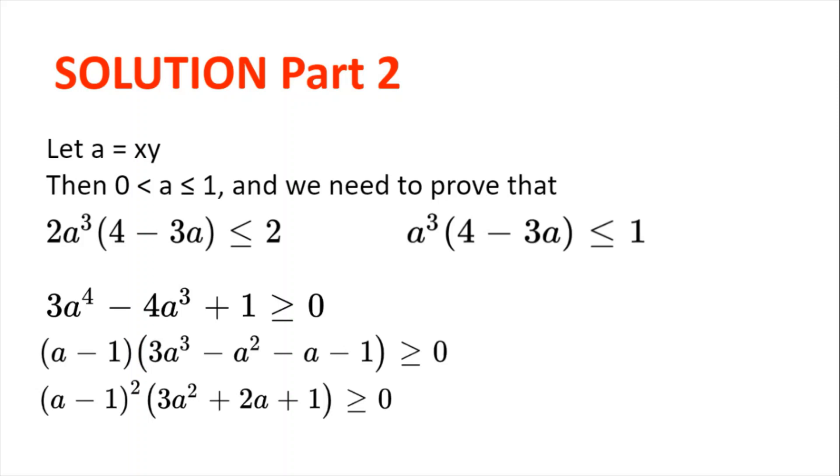Now, if we plug in the value a = 1 to the left hand side, we get 3 - 4 + 1, which is 0. So, we can factorize the left hand side to get (a - 1) multiplied by something, and that something is 3a³ - a² - a - 1.